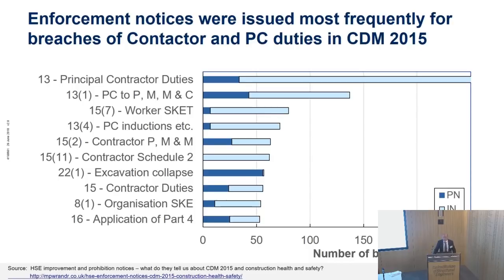I also looked at it in terms of the individual regulations. It may not come as too much of a surprise that it's heavily dominated by principal contractors getting notices for planning, managing, monitoring and coordinating. There are a few in terms of what we might call the more engineering risks — things like excavation collapse. Part four contains structural stability and excavations, and electricity.